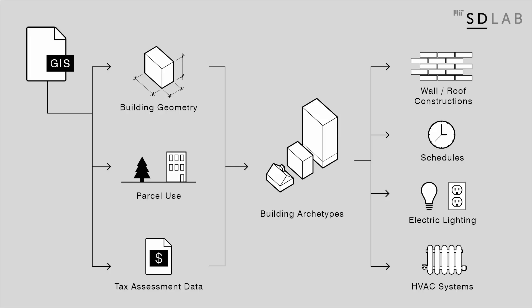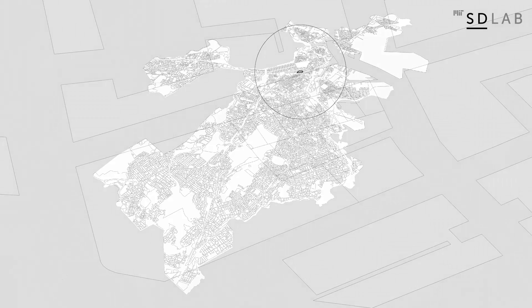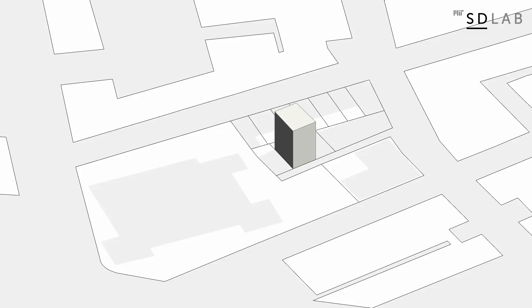To properly consider local weather conditions, the model incorporates climate data collected over several years at Logan Airport, including hourly values for air temperature and relative humidity, as well as wind and solar radiation. An urban energy model also requires information about the geometry of each building. The GIS basefile contains detailed building footprints that are extruded based on documented roof heights. The resulting outer building envelope is then further subdivided into volumes for each independent floor. Lastly, windows are automatically generated on all facades.